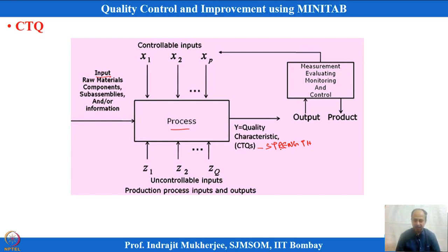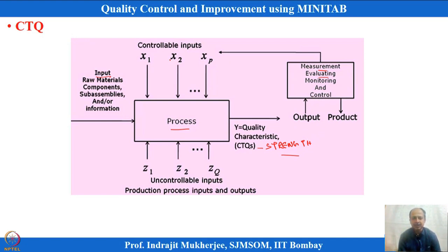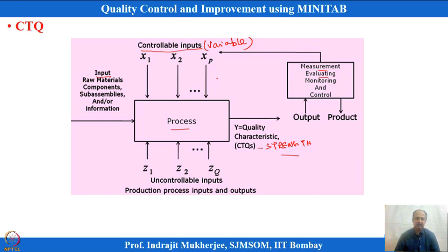After the product comes out, we measure the CTQ dimensions — is the strength within specification, is the elongation within dimensions given by the customer? We do measurement and evaluation, and based on what CTQ dimensions we are getting, we can change the process settings. These are controllable inputs — variables we can change like knobs, such as machine speed, feed, depth of cut.